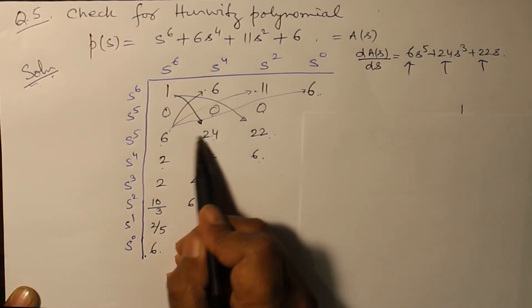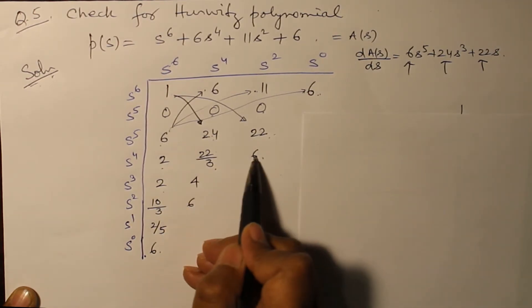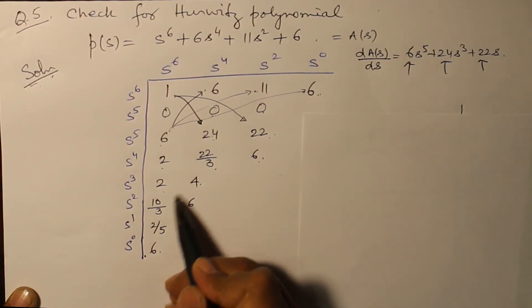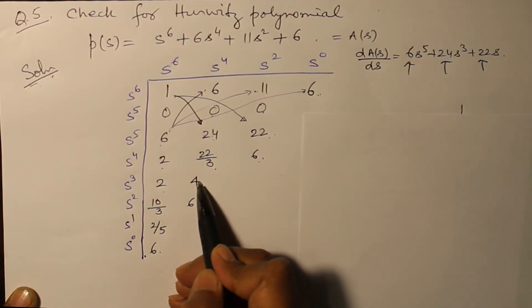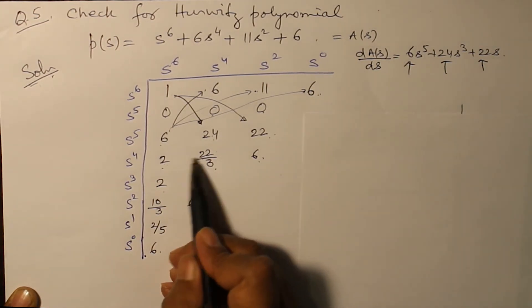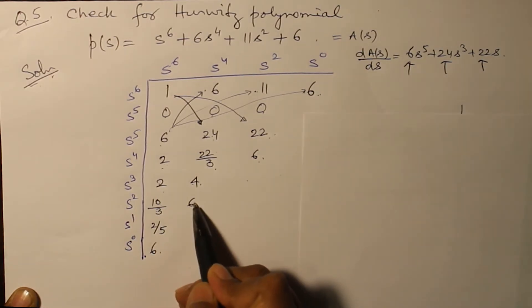Similarly, we multiply these two, subtract this, divide by 2, you get 2 times - 44 minus 36, that is 8 divided by 2, that gives you 4. Similarly, 10 by 3 into 4 and 10 by 3 and 6 have been obtained by this process.